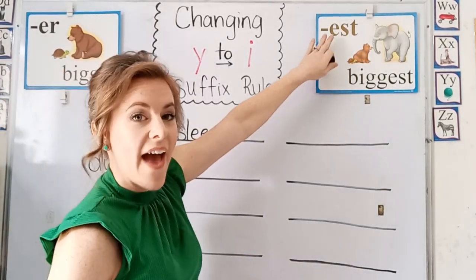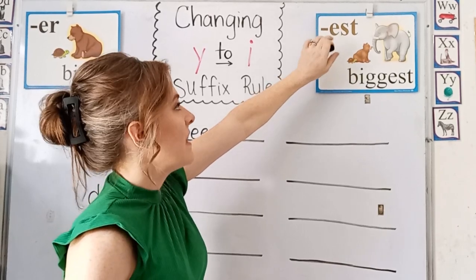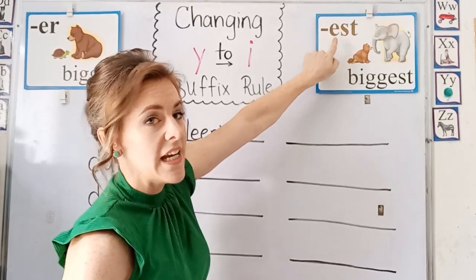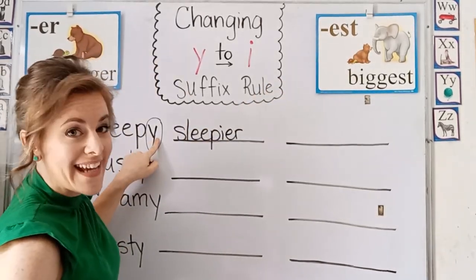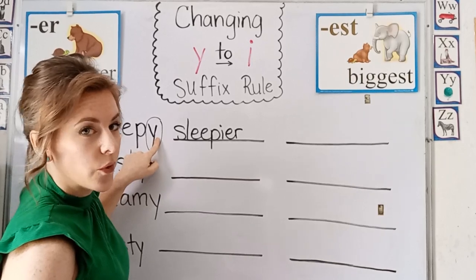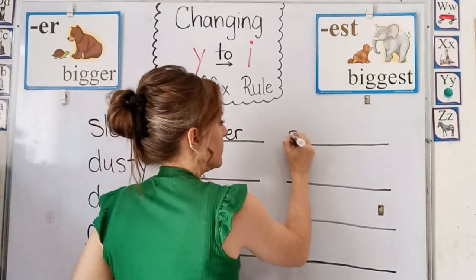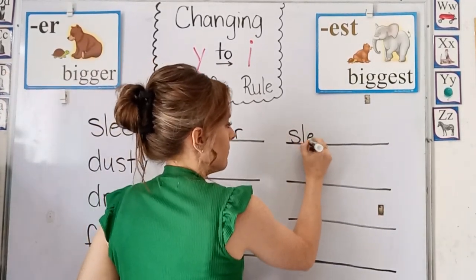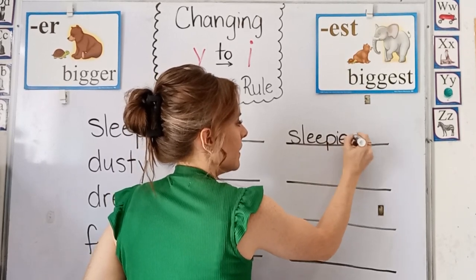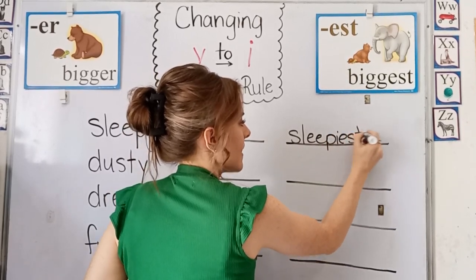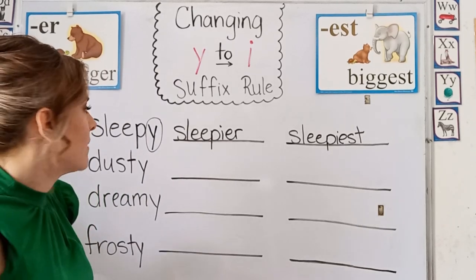And then here we have est. This suffix begins with an E and we have the Y at the end of our root word. So we're going to change the Y to an I. Sleepiest.